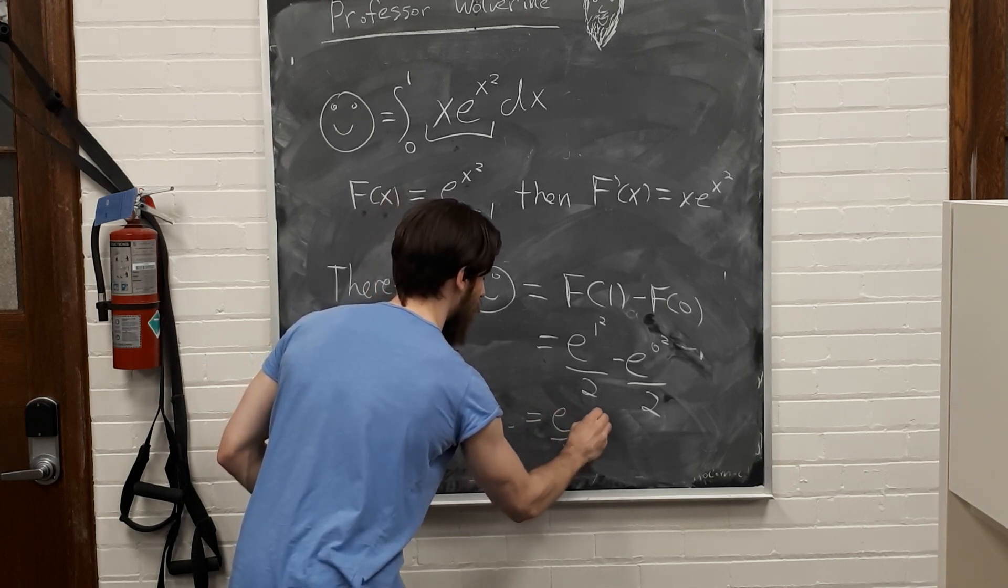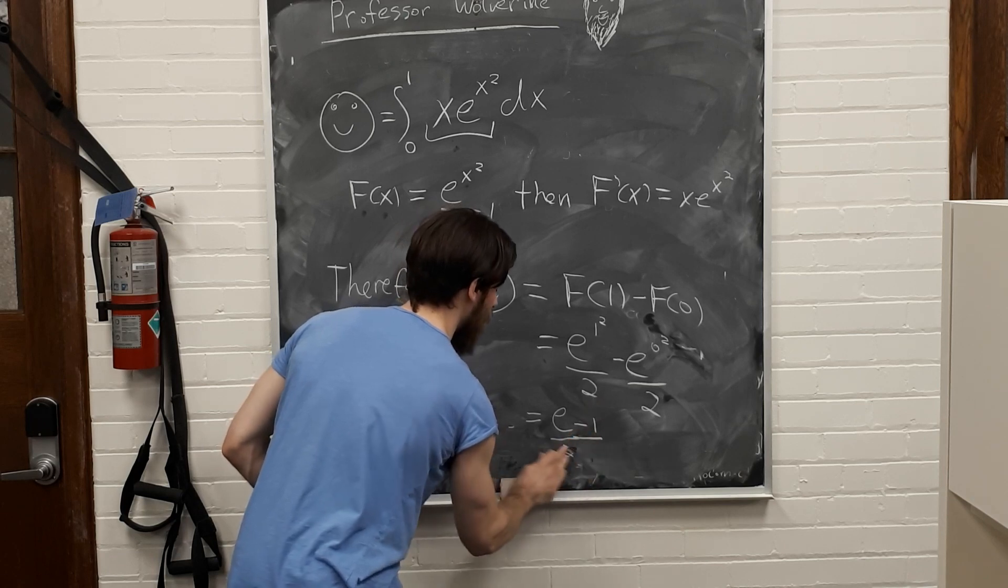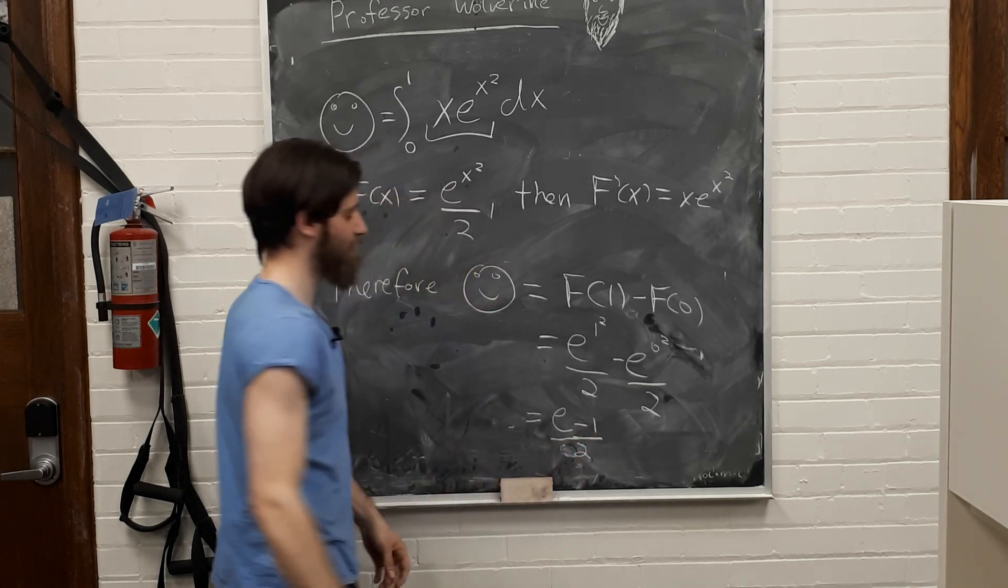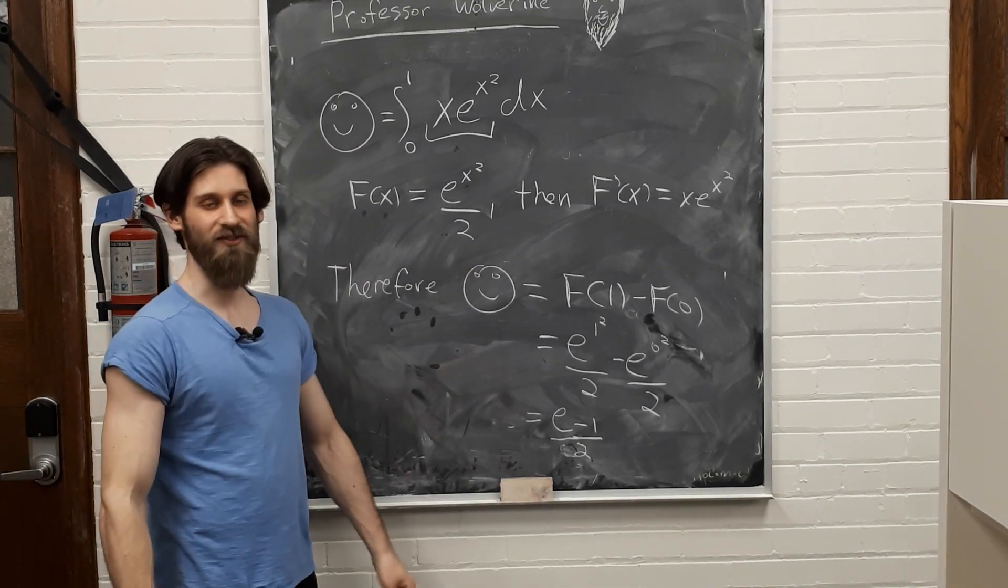So, this is just equal to e over 2, minus 1 over 2. Or, let me write this as, e minus 1 divided by 2. All right? So, that's what it is.